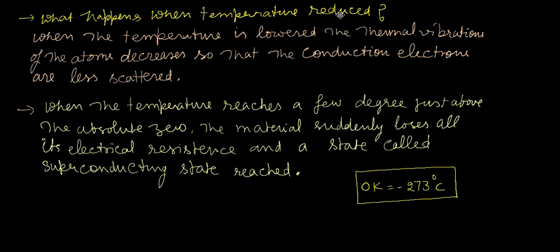What happens when temperature reduces? You keep this material specimen and decrease the temperature. When the temperature is lowered, the thermal vibration of the atoms decreases so that the conduction electrons are less scattered into the lattice. When the temperature reaches a few degrees just above absolute zero, the material suddenly loses all its electrical resistance, and a superconducting state is reached.